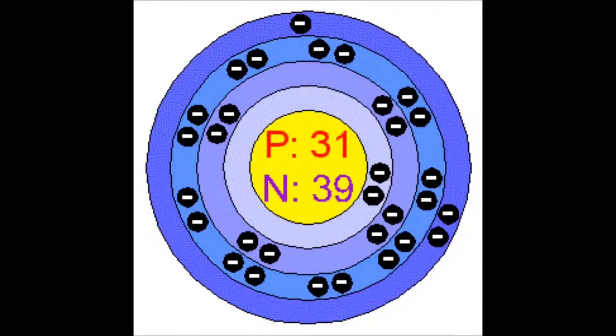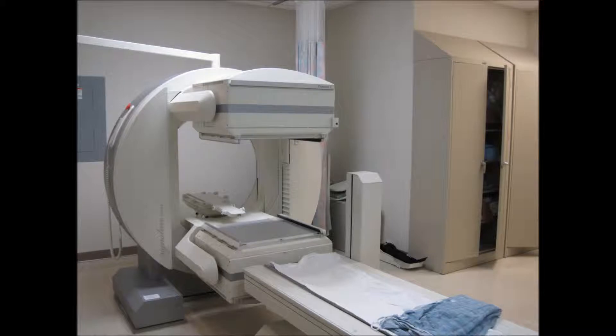Another purpose for the scan is to detect cancerous diseases such as lymphomas, non-Hodgkin's disease and Hodgkin's disease. A gallium scan of the body is a nuclear medicine procedure that detects gallium, a form of radionuclide, through a gamma camera.